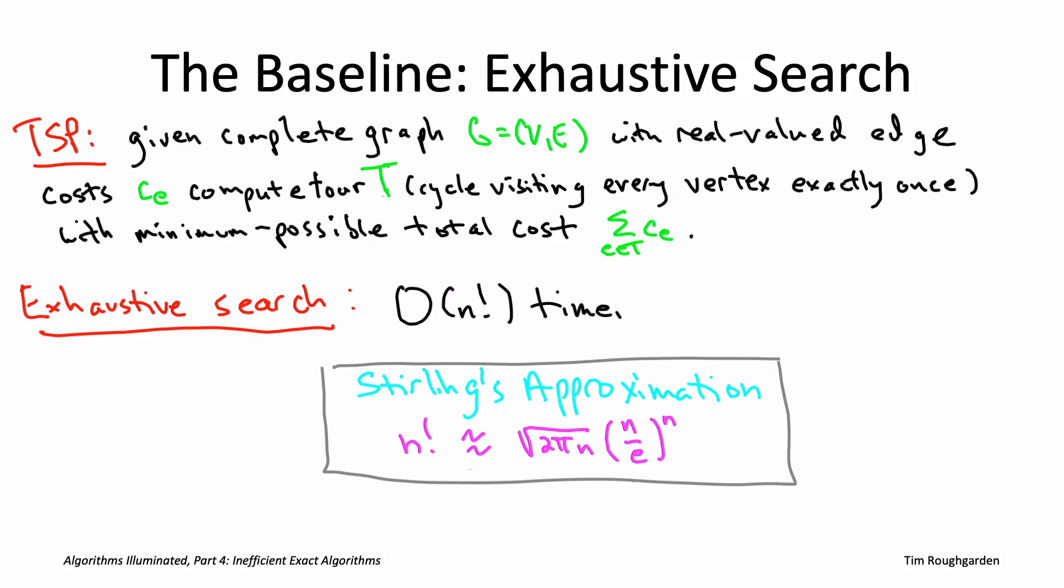There's also a leading term, root 2 pi n, that's less important. What's more important to notice is this n over e raised to the n. Notice that as soon as n gets even modestly big, multiplying a bunch of n over e's times each other is going to be a much bigger exponential than multiplying a bunch of twos together. That shows that n factorial really is growing much faster than 2^n as n grows large.